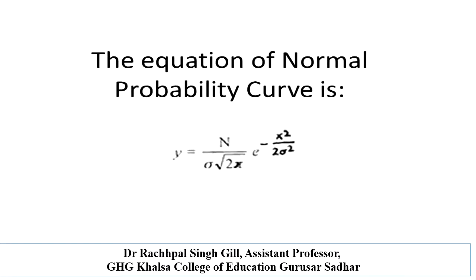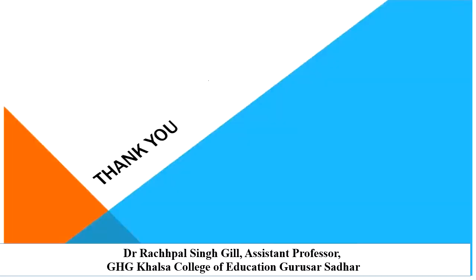The equation of the normal probability curve is: y equals N over sigma times the square root of 2π, raised to the exponential power of minus x squared over 2 sigma squared. Here, N is the number of cases, sigma is the standard deviation, and the value of pi is 3.14. Thank you so much.